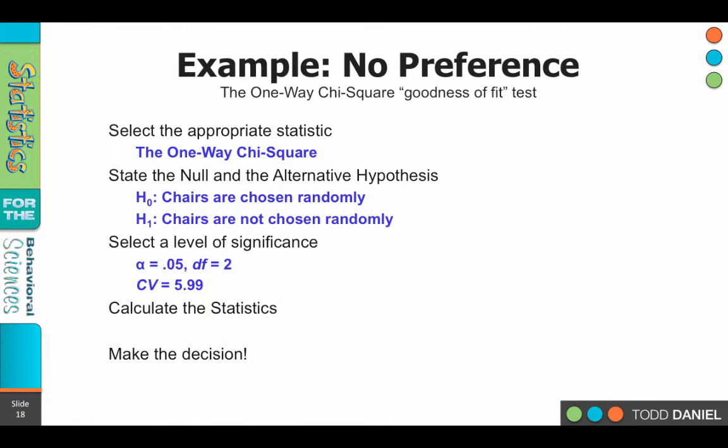Let's go back to our five steps. The critical value that we were looking for was 5.99. We calculated a chi-square value of 7.85. So how do you make a decision?